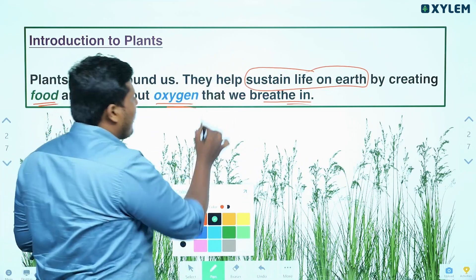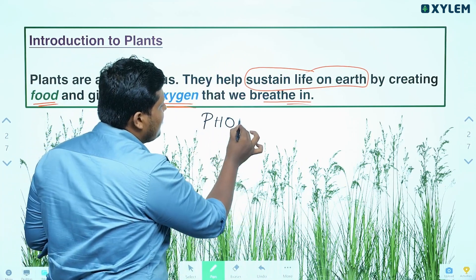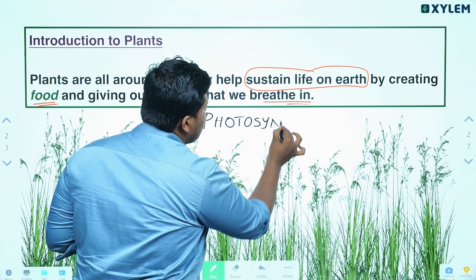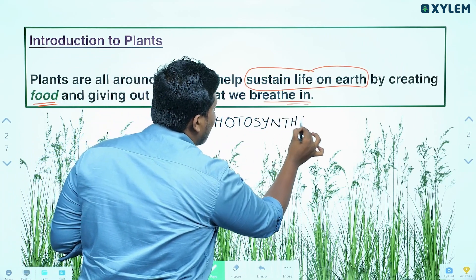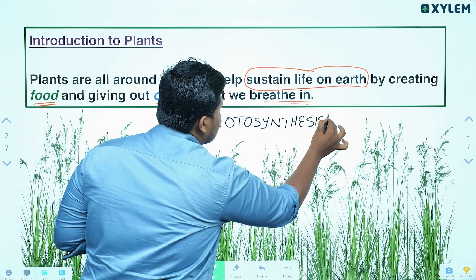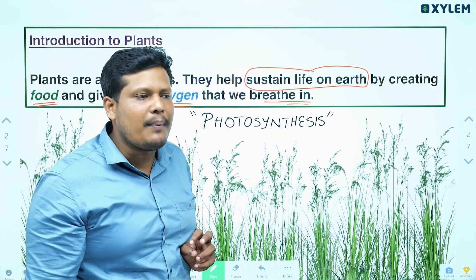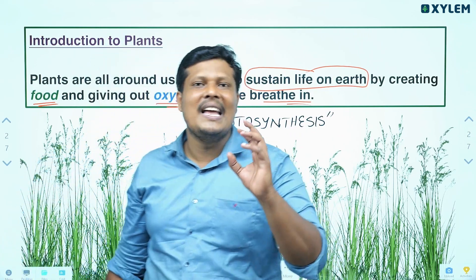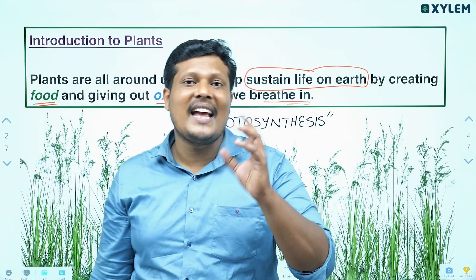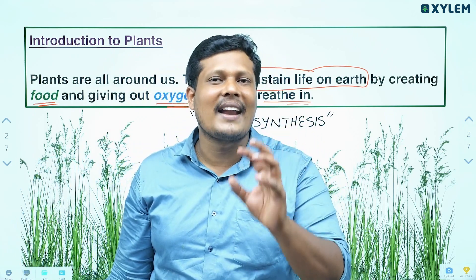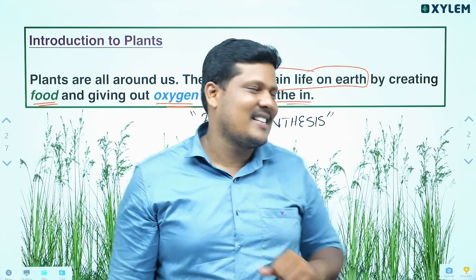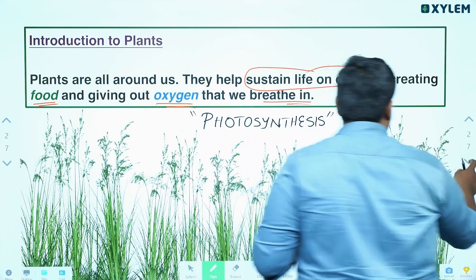We have to study photosynthesis. Photosynthesis is a process — we are learning the process of photosynthesis. It is a process by which plants prepare their own food. That process is called photosynthesis. Got it? Very good. Moving on to the next slide.